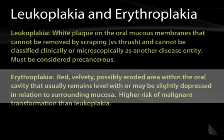Erythroplakia, as the name implies, is a red, velvety, sometimes eroded area within the oral cavity that is usually level with or slightly depressed in relation to the surrounding mucosa. There is a higher risk of malignant transformation with erythroplakia than with leukoplakia.